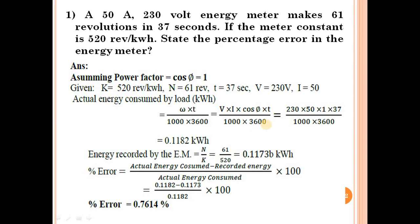So that is your actual energy consumed by the load — 0.1182 kilowatt hours. Now the original energy meter constant formula is k = n / e, where k is the energy meter constant, n is number of revolutions, and e is energy recorded by the energy meter. So energy recorded by the energy meter: e = n / k.